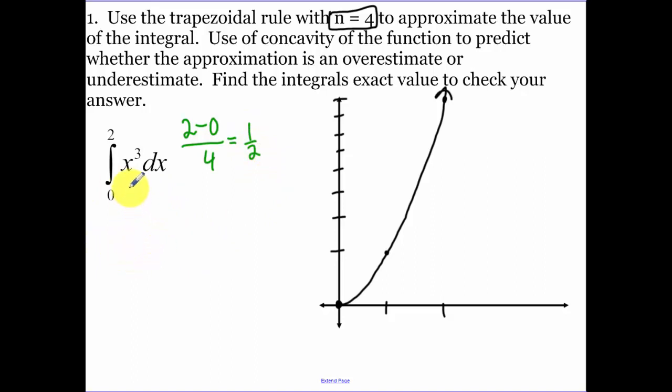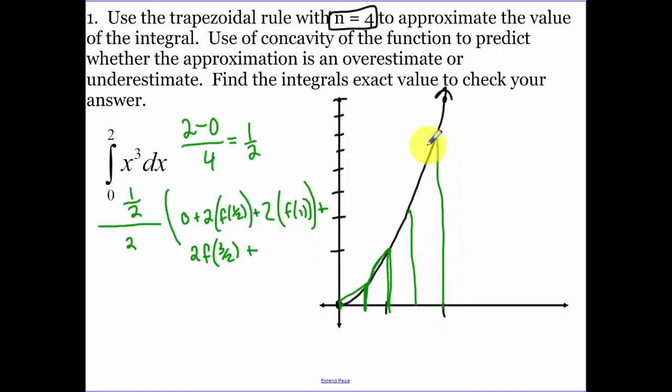If you remember the formula that I gave you guys, it's 1/2 the height divided by 2, our first function value. The first function value is actually 0. We have twice the next function value, which is f of 1/2. We have twice the next function value. And again, this only works if you have equal subintervals. Plus, our next function value, twice our next function value would be 3/2. Plus just one of our last value, which is f of 2.